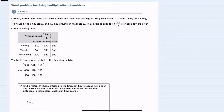For this word problem, we're told that Kareem, Caitlin, and Diane are each traveling by plane on Monday, Tuesday, and Wednesday. They each spend 1.3 hours flying on Monday, 1.2 hours flying on Tuesday, and 1.7 hours flying on Wednesday. We're also given a table with their average speed for each of those flights.